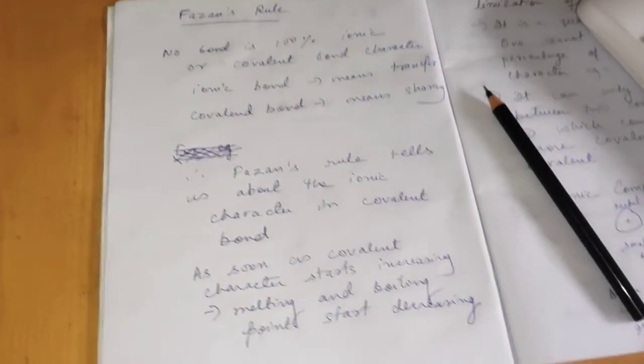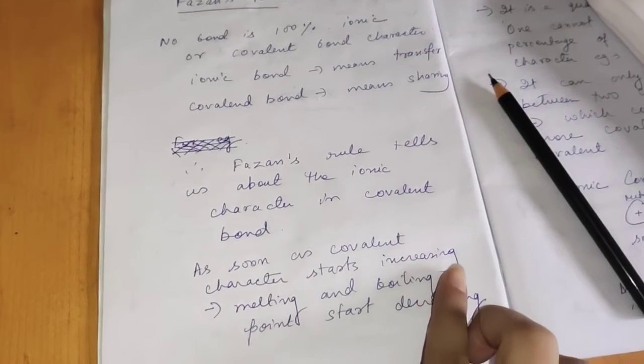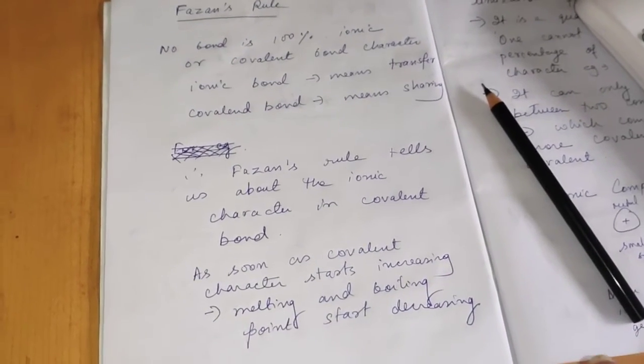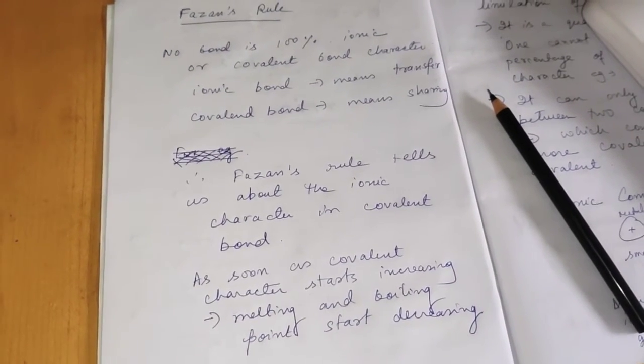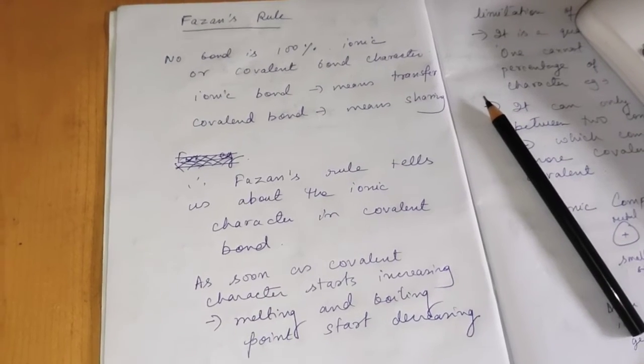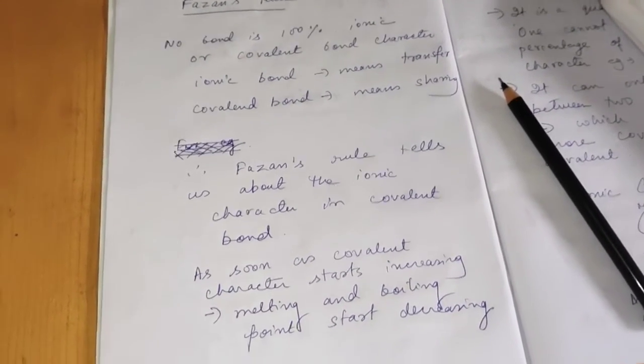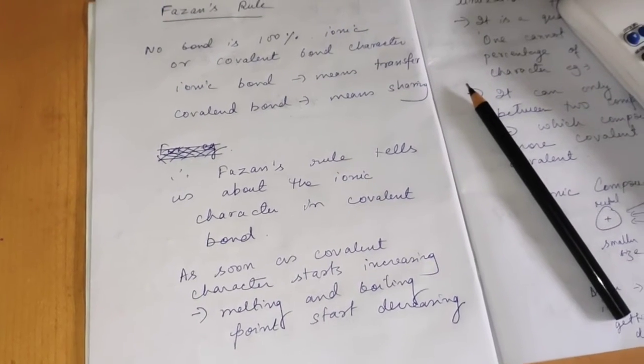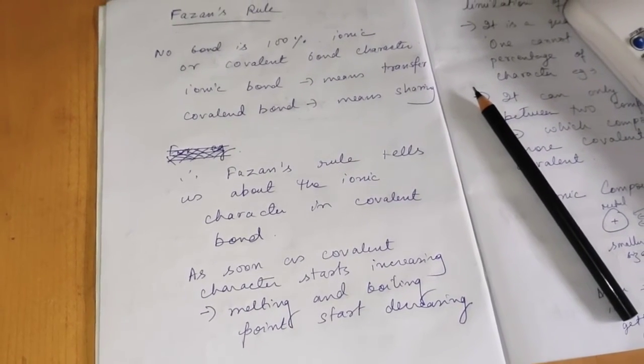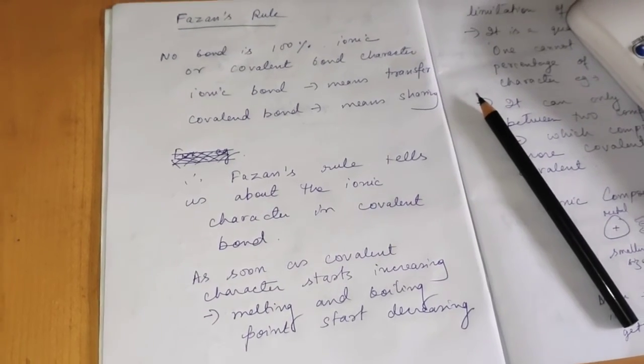As soon as the covalent character starts increasing, lesser would be its melting or boiling point. So they are inversely proportional to each other. As the covalent character starts increasing melting and boiling point would start decreasing.